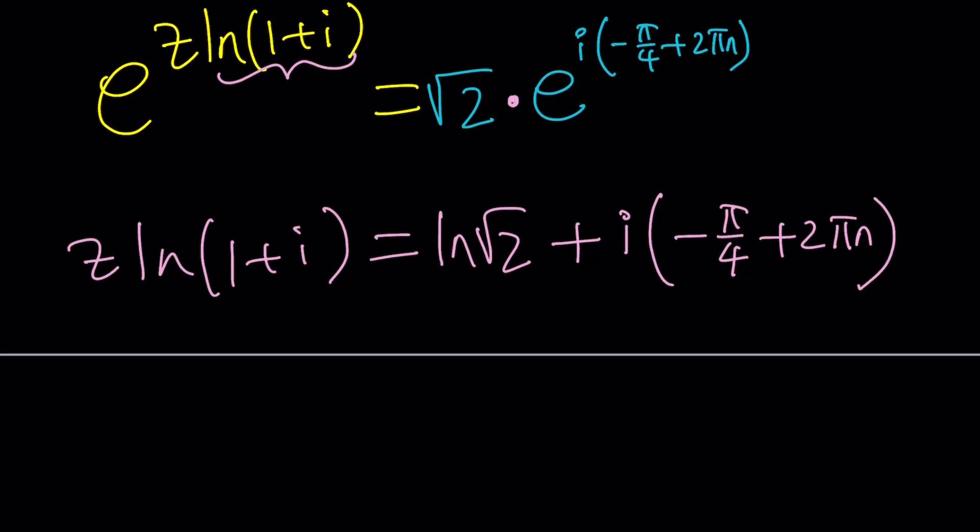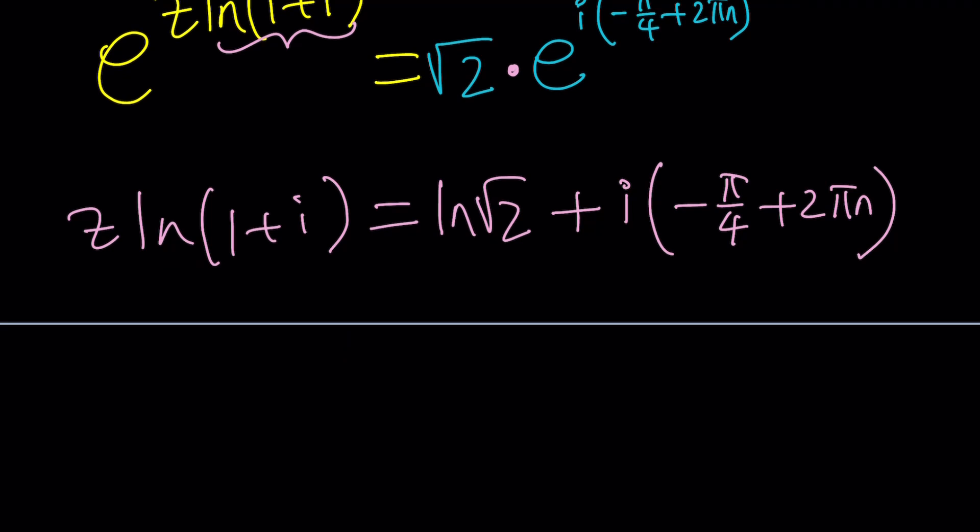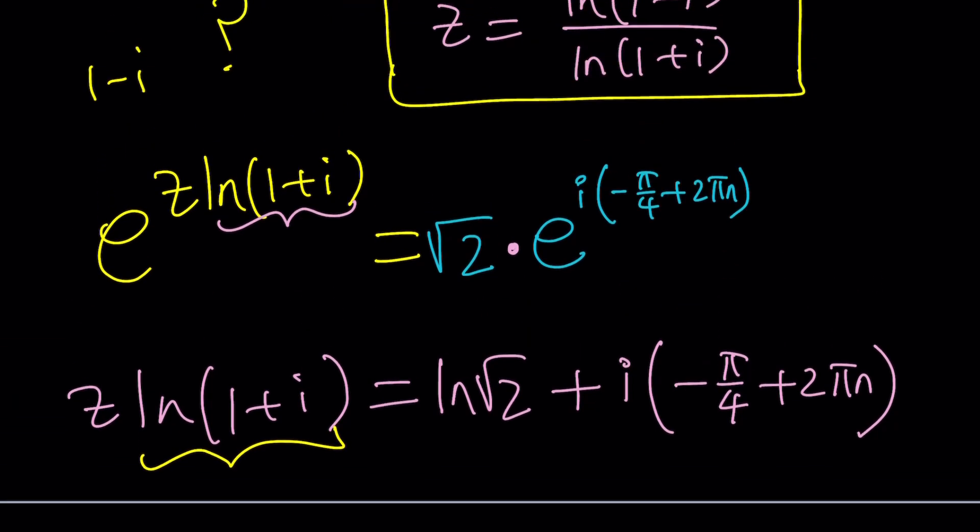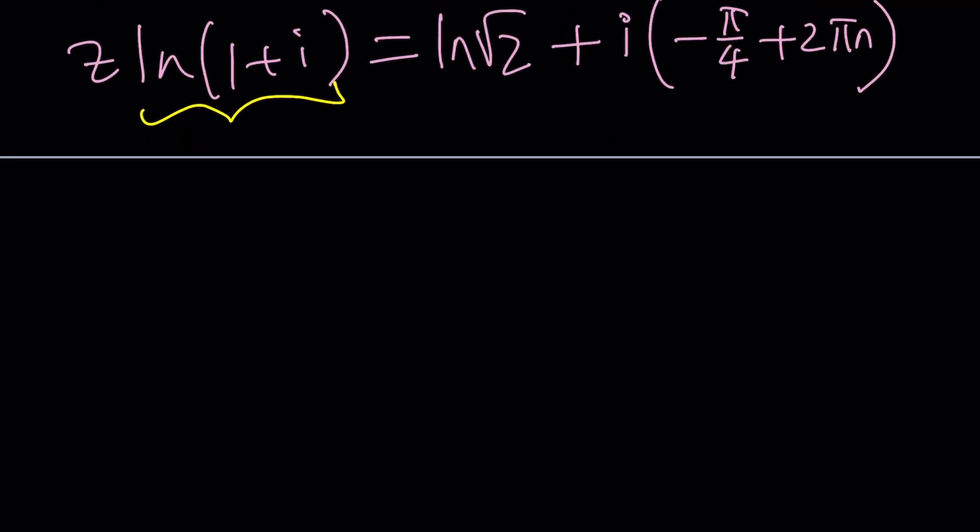Now, let's go ahead and focus on LN 1 plus I. But since we already know LN 1 minus I, this should be fairly easy. Very similar to this one. It's going to be LN root 2 plus I times pi over 4. This time, the argument is pi over 4 because 1 plus I is in the first quadrant. You can guess, right? Plus 2 pi K. I just wanted to use a different integer because they don't have to be the same.